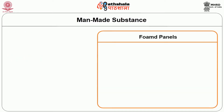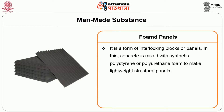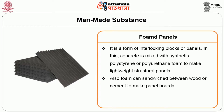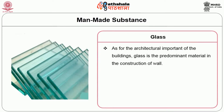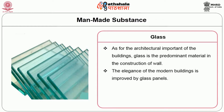Foamed panels: This is a form of interlocking blocks or panels in which concrete is mixed with synthetic polystyrene or polyurethane foam to make lightweight structural panels. Foam can also be sandwiched between wood or cement to make panel boards. Glass: As for the structural importance of buildings, glass is a predominant material in wall construction. The elegance of modern buildings is improved by glass panels.